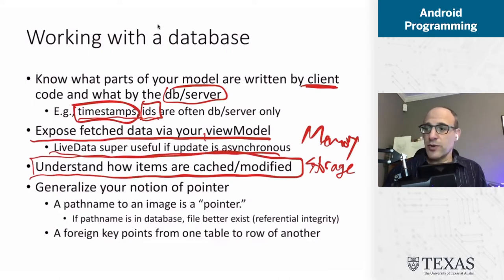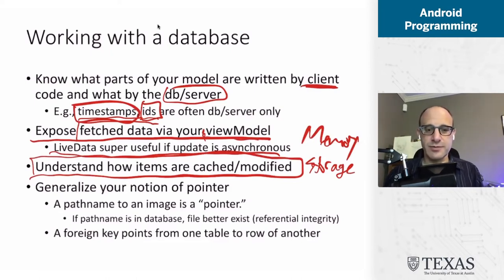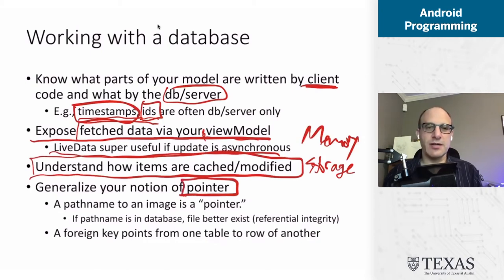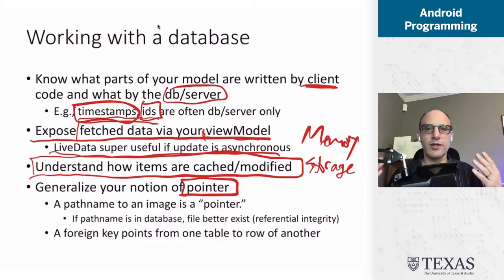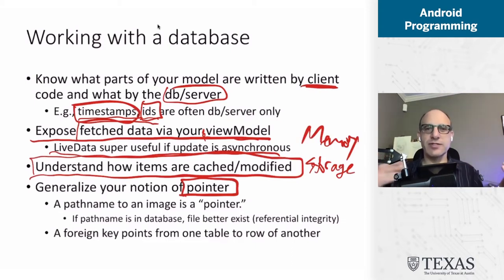The way we avoid that is we export our data using LiveData in a ViewModel. And just like when we talked about foreign keys in our database as pointers, you should think about how your data references other parts of the data — those are also pointers.